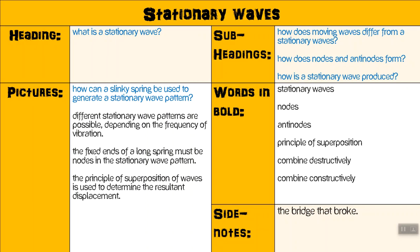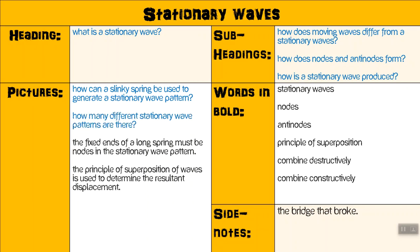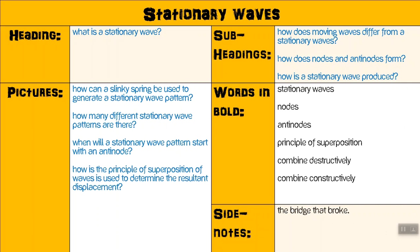If we look at the different wave patterns: how many different stationary wave patterns are there? And if we look at the fact that fixed ends of a long spring must be nodes in a stationary wave: when will the stationary wave pattern start with an antinode? In what situation will that happen? And if we look at the principle of superpositioning: how is the principle of superpositioning of waves used to determine the resultant displacement?